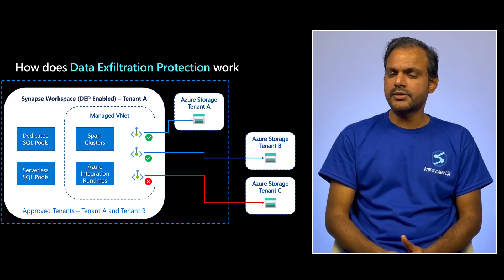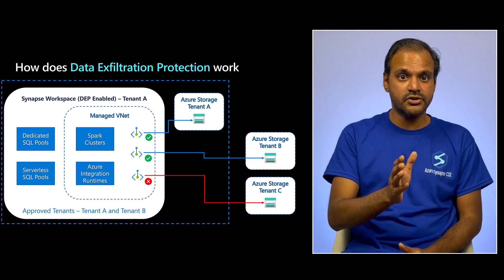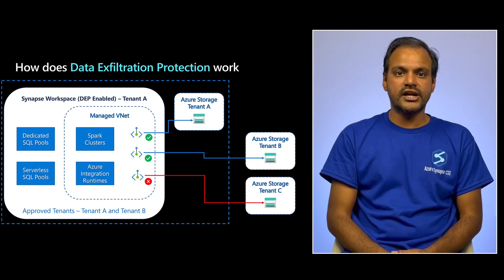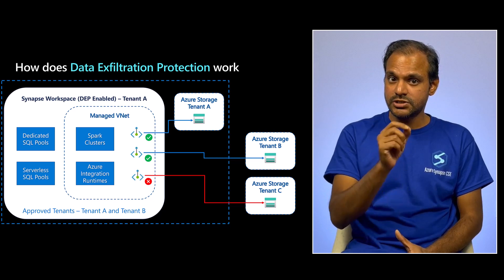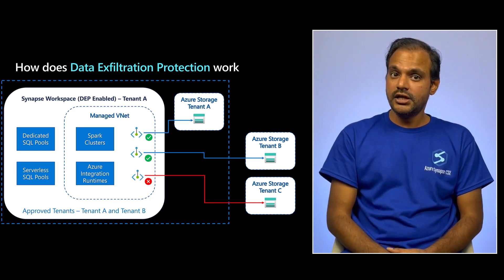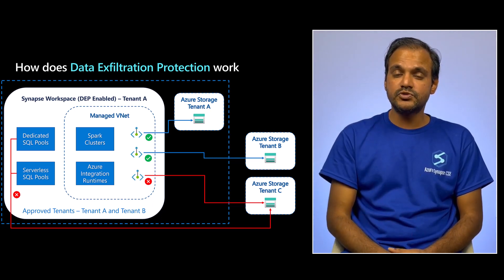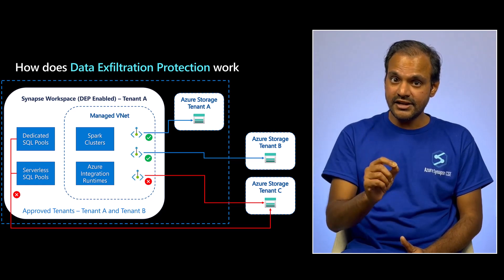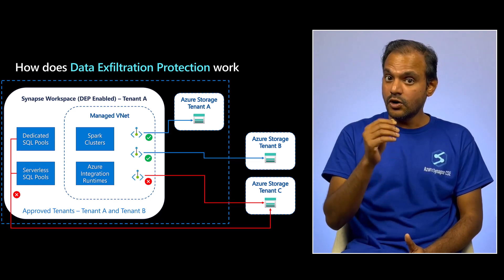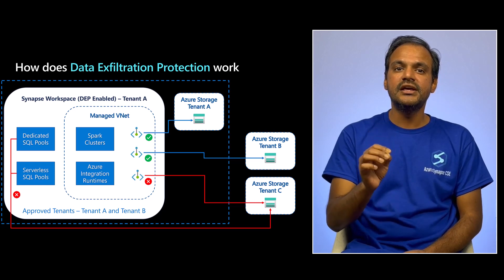Since data exfiltration protection is enabled on this workspace, all connections from the Apache Spark pools and Azure integration runtimes must use these managed private endpoints — you cannot connect to any resource without a managed private endpoint connection. The dedicated SQL pools and serverless SQL pools do not directly use managed private endpoints for their connectivity. But if you try to use CETAS to export data to an external storage account, Synapse will automatically check for the existence of a managed private endpoint to that storage account, and only then will the connection be permitted; otherwise, the outbound firewall rule will block it. This is how data exfiltration protection, or DEP, is implemented in Synapse.